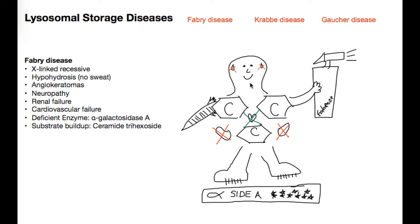Next is angiokeratomas, which are little cutaneous capillary blebs. The word 'carrot' is right there in the middle of 'angiokeratoma,' so to help remember angiokeratomas I drew a carrot coming out of his right arm. Next is neuropathy — neuropathy is like numbness and tingling, so I drew my person with little cleats to remember the tingles and pinpricks on his feet. That's my universal symbol for neuropathy.